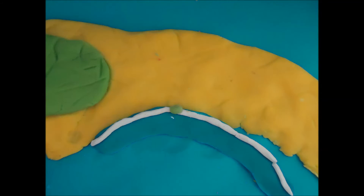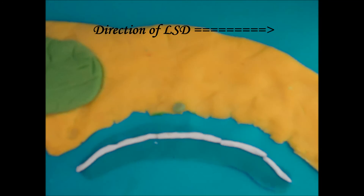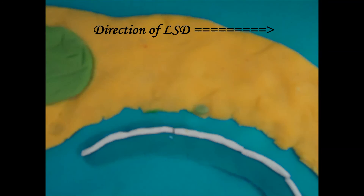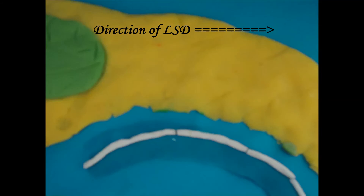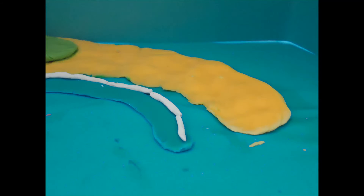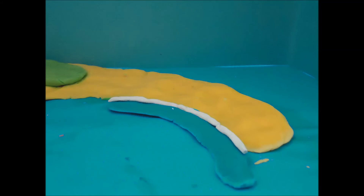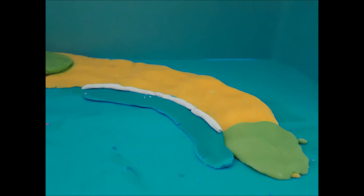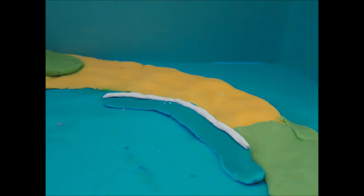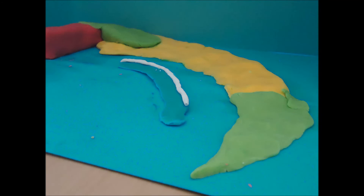Now, let's see the process over again one more time. The process of Longshore Drift continues along the coast and sediments are deposited at the end of the coast. As more sediments get deposited, it forms a mass of land which is known as a spit.